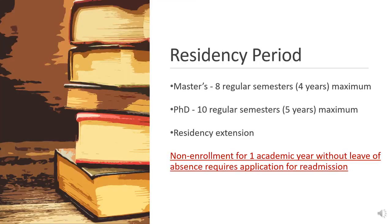For the residency period, Master's students have eight regular semesters (fall and spring) to complete their degree, and PhD students have ten semesters. If you think you will need additional time, you can petition for a residency extension and ask for an additional semester or two. If you have an approved leave of absence, the period you are away will not count toward your maximum residency. You are allowed to petition for two semesters of leave at a time, and for a total of four semesters during your residency.